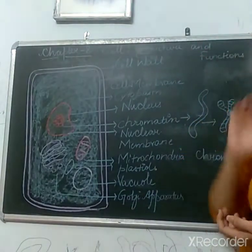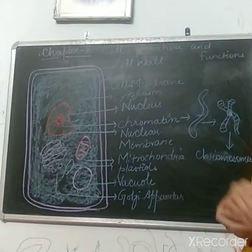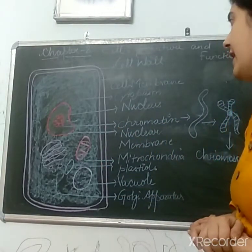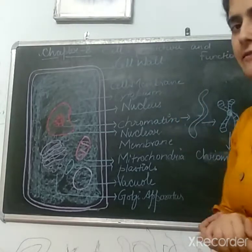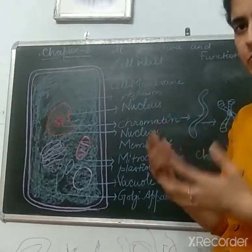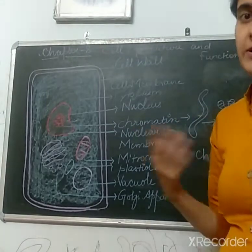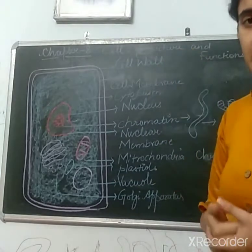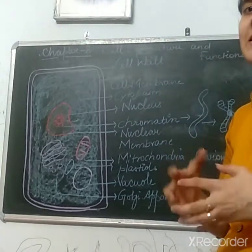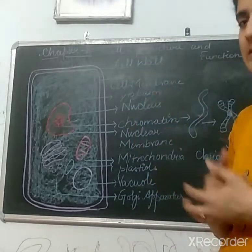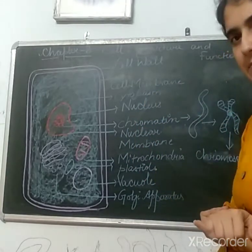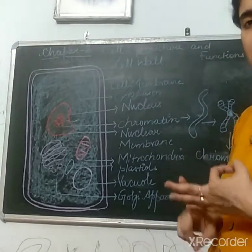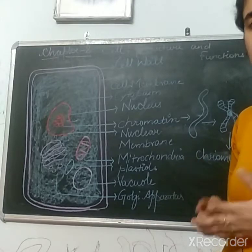Cell membrane is the outermost covering of a cell and it allows movement to come inside or go outside from the cell. It also gives shape to the cell. Some cells do not have any specific shape — it doesn't mean their cell membrane is absent. Their cell membrane is present but elastic. Cell membrane is present in animal cells, plant cells, and microorganisms like bacteria, algae, and fungi.